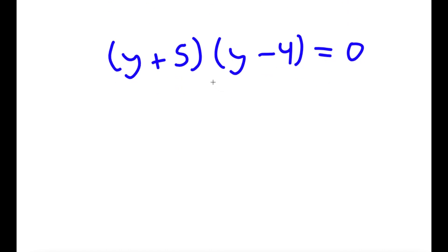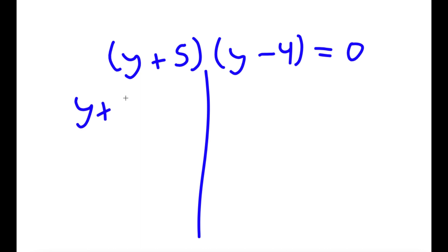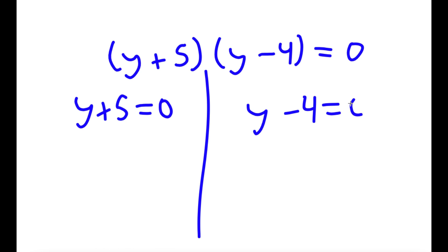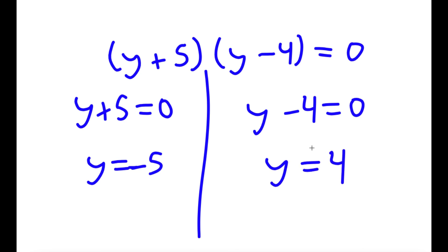This gives me two equations: y plus 5 is equal to 0, and y minus 4 is equal to 0. So for y plus 5 equals 0, y is equal to negative 5. And for y minus 4 equals 0, y equals 4.